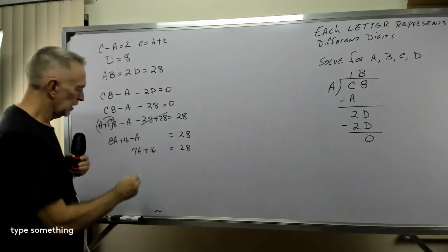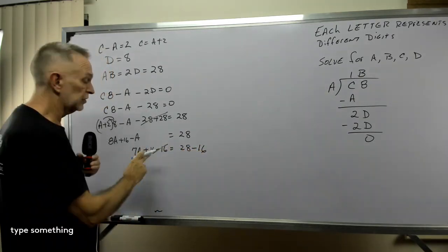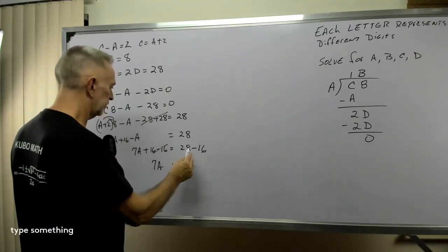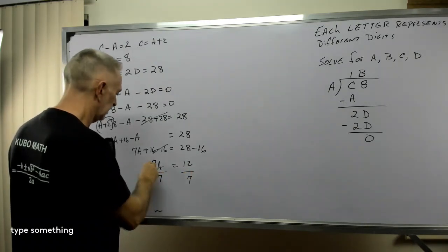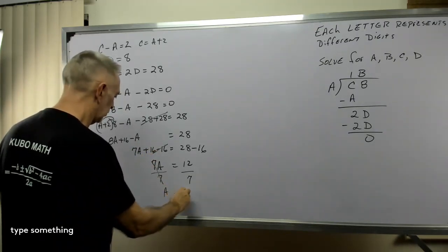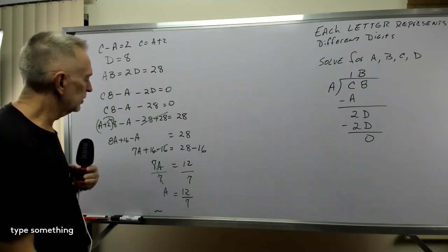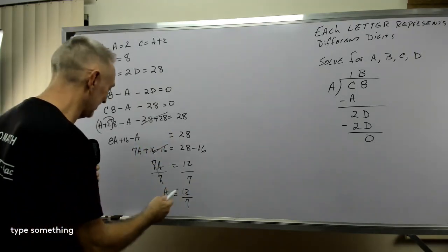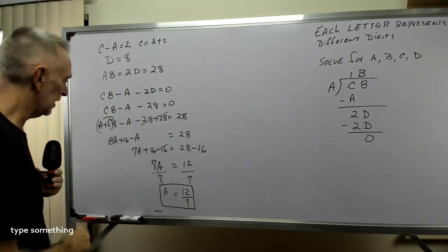Well, I'm going to subtract 16 from both sides, so 8A minus A minus A is 7A, 7A plus 16 equals 28. So, 28 minus 16 is 12. So, divide both sides by 7, 7 divided by 7 is 1, 1 times A is A, and that equals 12 over 7. Now, as I worked through this, I thought, how in the world is a third grader going to do that? When I was in the third grade, I didn't do that. Okay, so here we go. A equals 12 over 7.